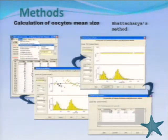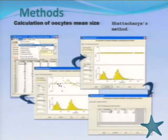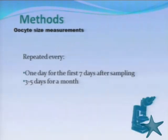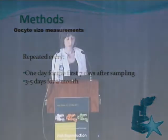In order to obtain the mean size of every spawning batch, we used Bhattacharya's method within the program NORMSEP, provided by FAO, to analyze the size frequency distributions. Measurements were repeated every day for the first seven days after sampling, then continued for a month at a frequency of three to five days.